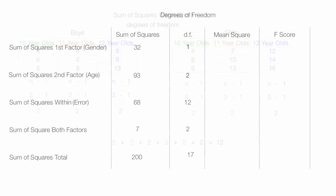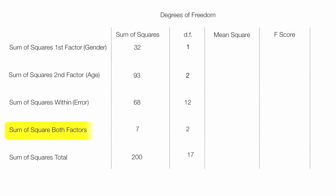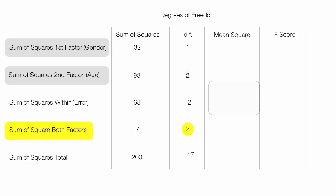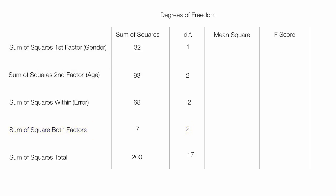The degrees of freedom for the sum of squares of both factors combined is 2. I calculate that by taking the first factor's df times the second factor's df: 1 times 2 equals 2. All the degrees of freedom add up to 17, which is the total degrees of freedom for the sum of squares total.